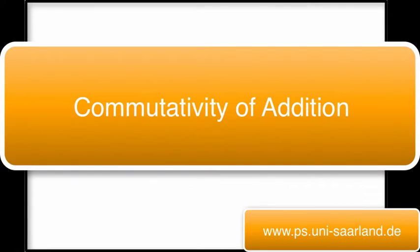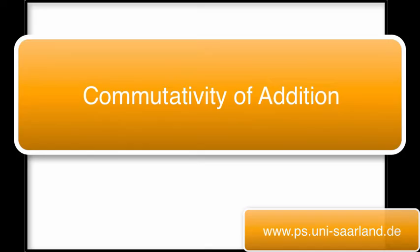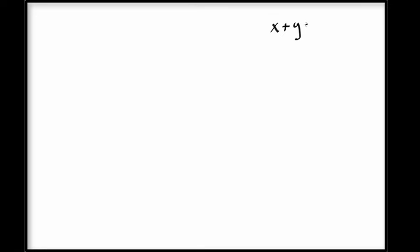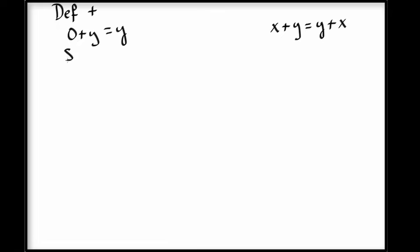Now we're going to prove commutativity of addition on the natural numbers. In other words, for all x and y in the natural numbers, x plus y equals y plus x. Recall that addition is defined recursively on the first argument. So the definition of plus is given by: 0 plus y is y, and successor of x plus y is the successor of x plus y.